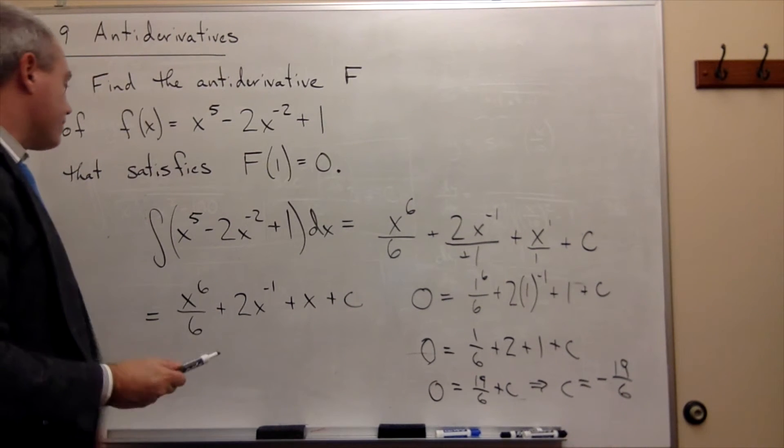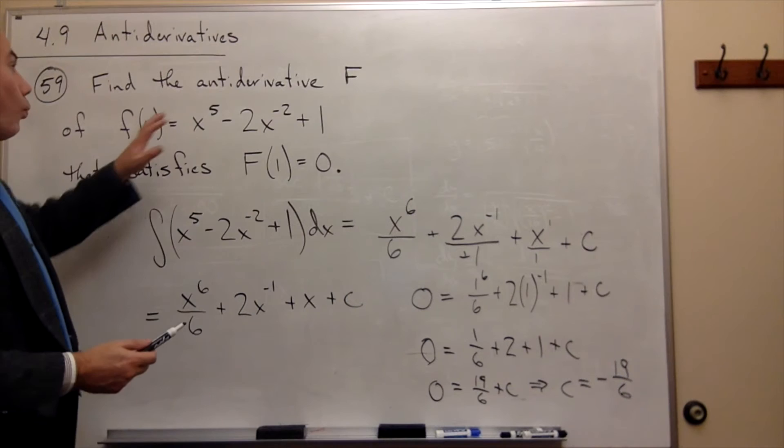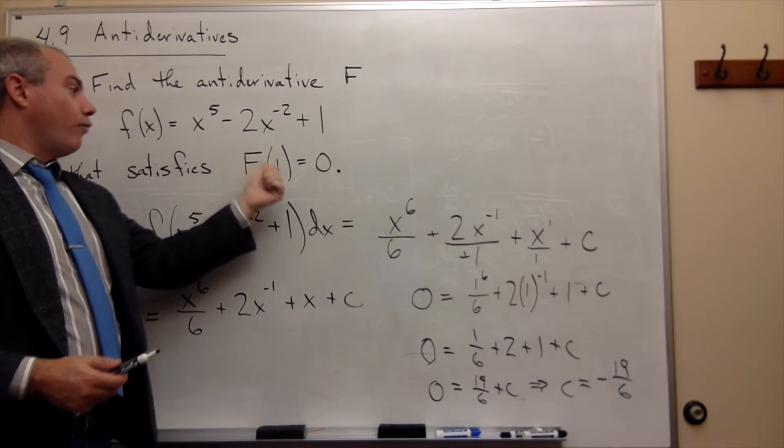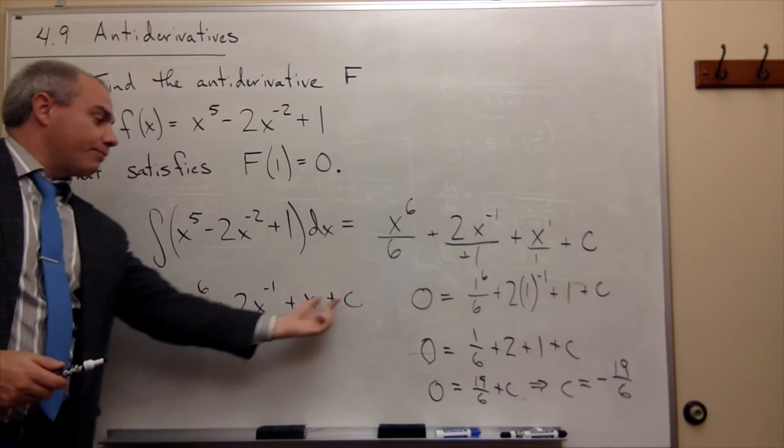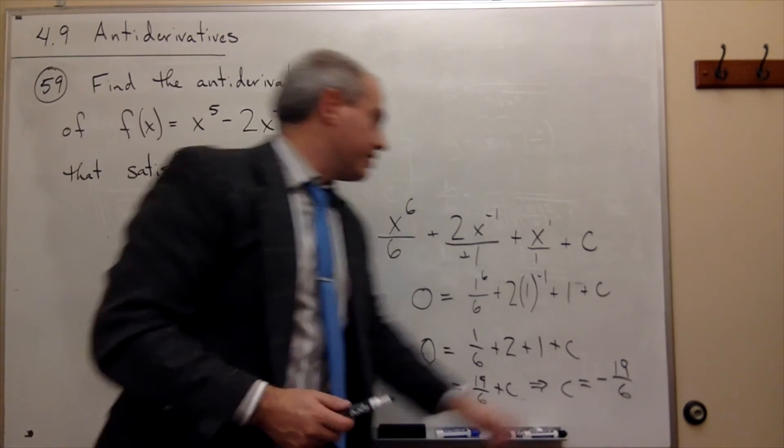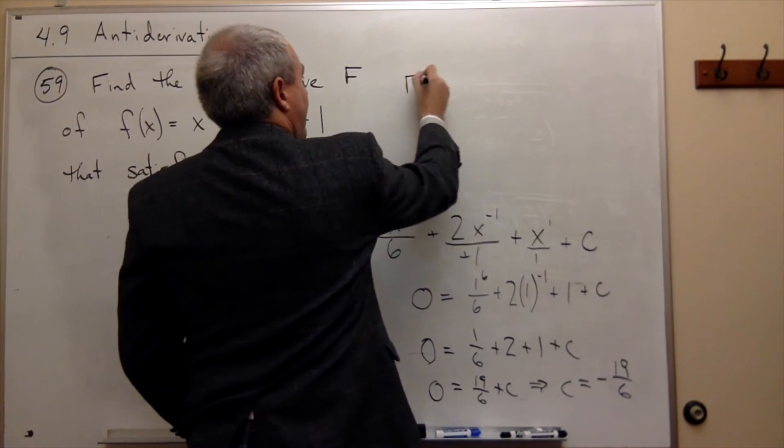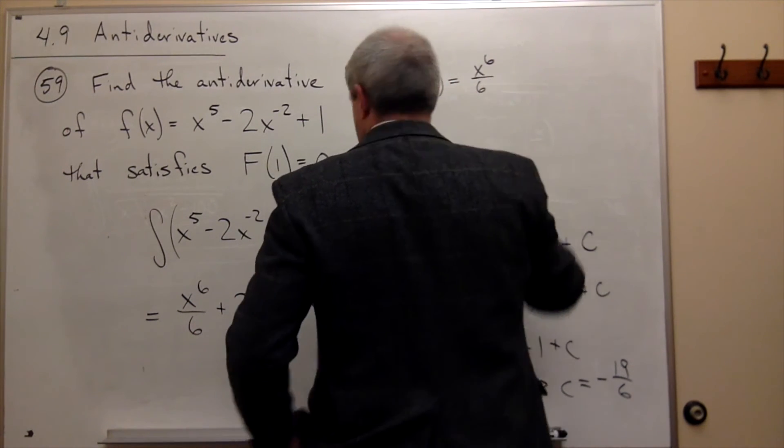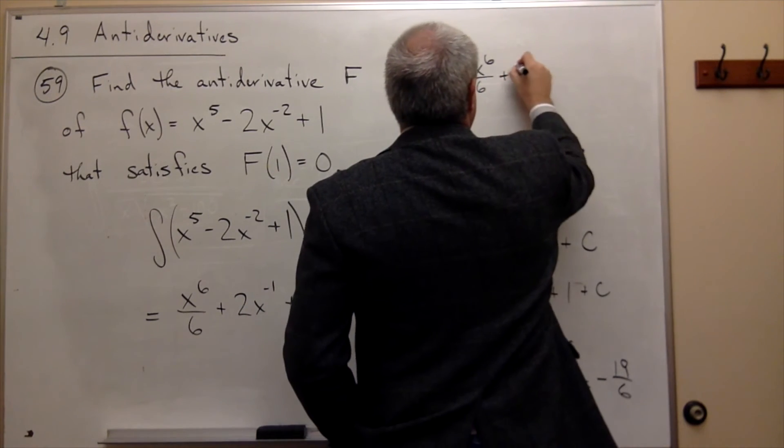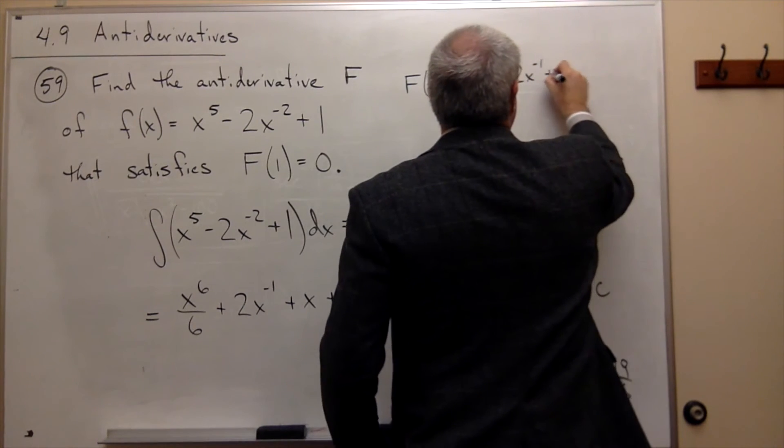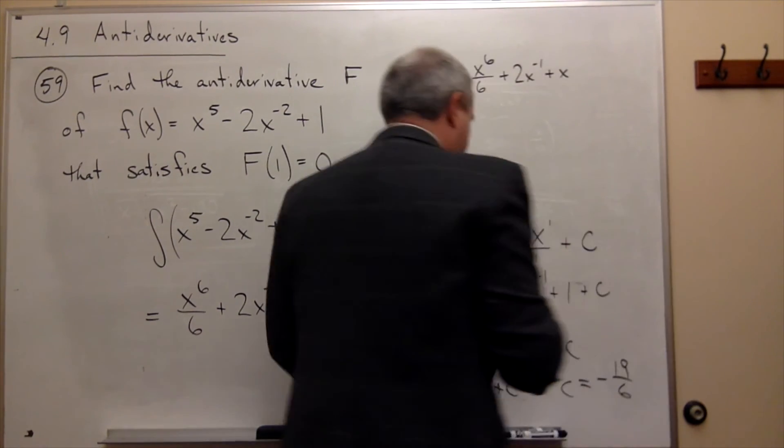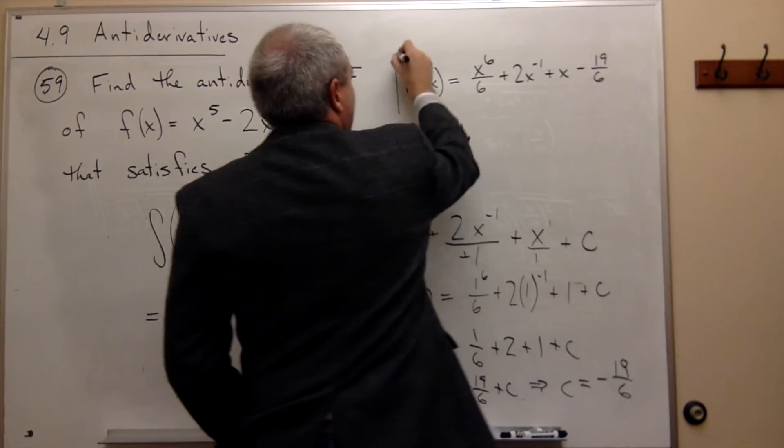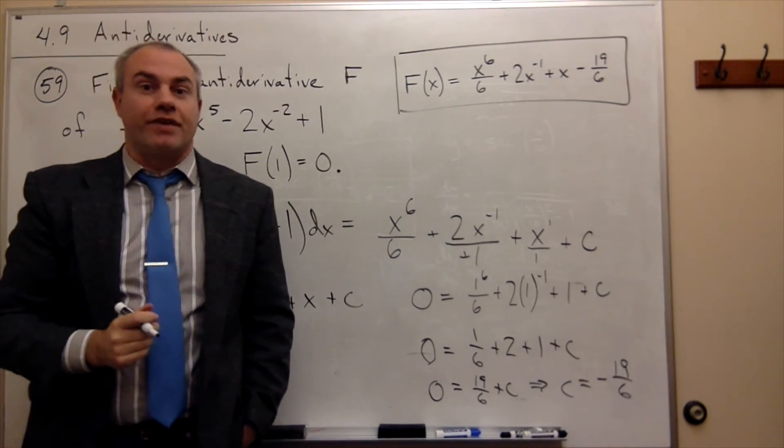And so now I can get my answer. Because my answer was, we're looking for what particular antiderivative, capital F, gives me that f of 1 is 0. Well, it's this guy, except we now know what c is. c is negative 19 over 6. So let's write it down. Capital F of x is equal to x to the sixth over 6, plus 2x to the negative 1, plus x, and then plus c. But c is negative 19 over 6. So minus 19 over 6. And we have found the antiderivative that we're looking for.